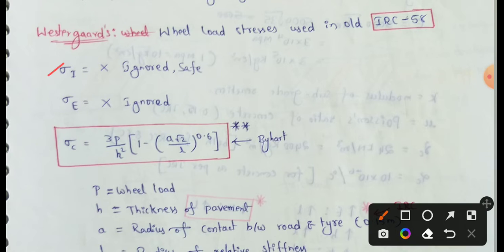First of all, interior loading. Interior loading is safe, so we will ignore this. We will ignore the interior loading in the rigid pavement design. We will also ignore the edge loading, as when we have failures and chances, that will be safe. Finally, in the corner position, we will act on this corner position, as we will assign a chance to achieve failures. So we will assign this corner position.